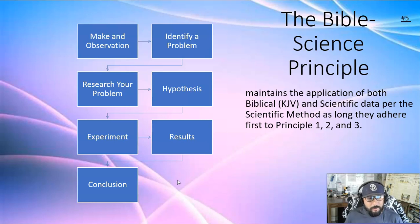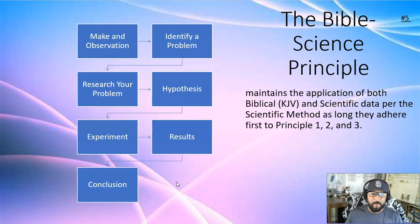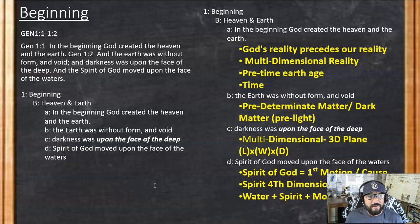So now we're going to apply these principles and build the nature of the world. We are literally going to form a detailed picture of the world and what it looks like if we apply the Bible — more specifically, the King James Bible — from a literal perspective. So when we look at the beginning: "In the beginning, God created the heaven and the earth. And the earth was without form and void, and darkness was upon the face of the deep, and the spirit of God moved upon the face of the waters."